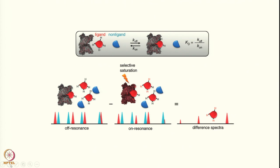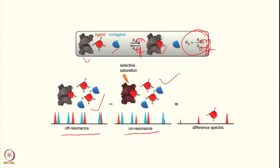That is the extension of STD NMR — saturation transfer difference NMR. To revise: here is the receptor molecule, here is the ligand that binds, and here is the non-ligand which does not bind. They are in equilibrium K-on and K-off. We have selectively saturated the protein in the STD fashion, took the difference — off-resonance where there is no saturation, and on-resonance where there is saturation — so some peaks have lower intensity. The difference spectrum gives us signals from the epitopes that bind. That is STD NMR.